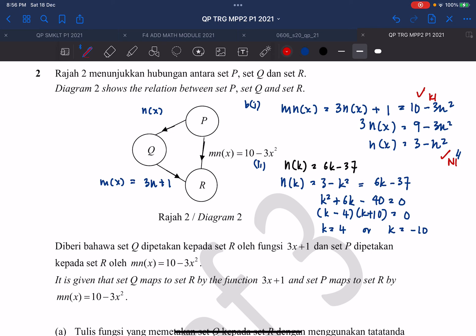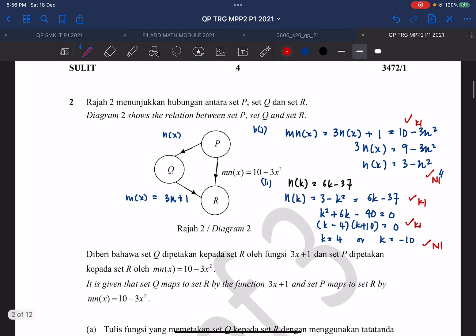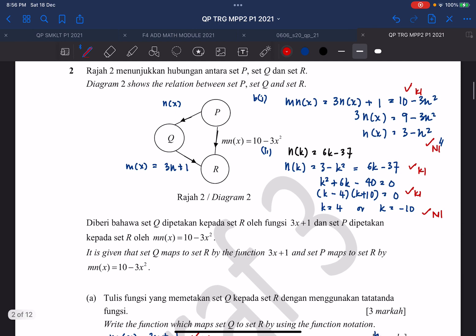So you get one mark when you equate equations. You get another mark when you got a linear factor for the quadratic equation. And you get the final mark for getting two correct answers. That's all for question 2. And then we'll continue with question 3 later. Thank you.